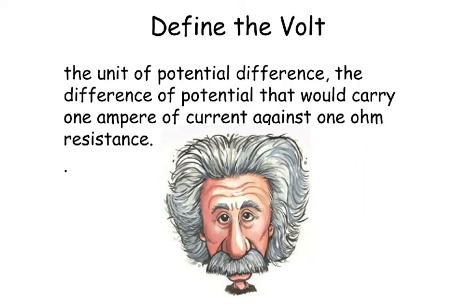Define the volt. The unit of potential difference — the difference of potential that would carry 1 ampere of current against 1 ohm of resistance.